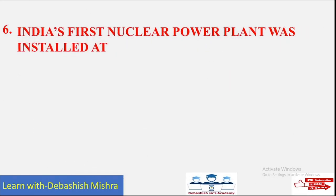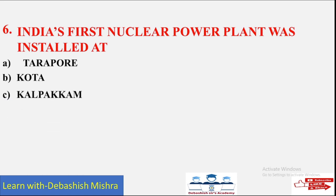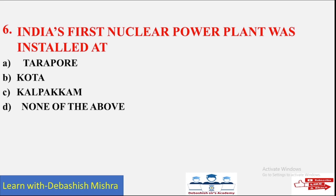It is also very, very important. India's first nuclear power plant was installed at — options are: A) Tarapur; B) Kota; C) Kalpakkam; D) None of the above. India's first nuclear power plant was installed at Tarapur.